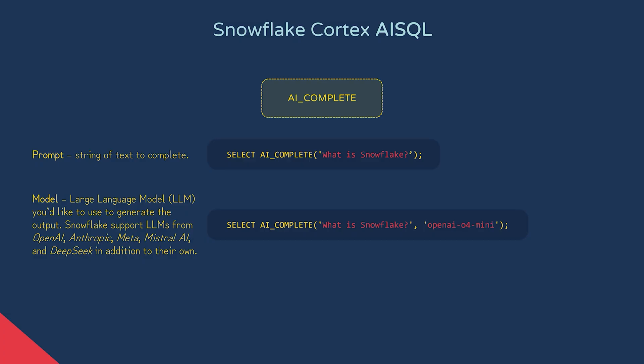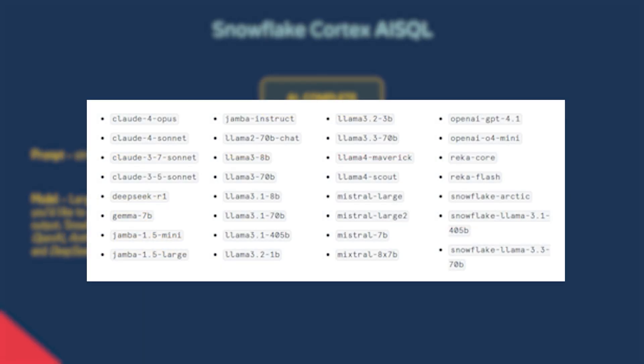Snowflake have their own models but also support LLMs from OpenAI, Anthropic, Meta, Mistral AI, and DeepSeek. Here's the comprehensive list. The choice of which model will affect the output and potentially the price to execute as well, with Snowflake's own models being the cheapest.